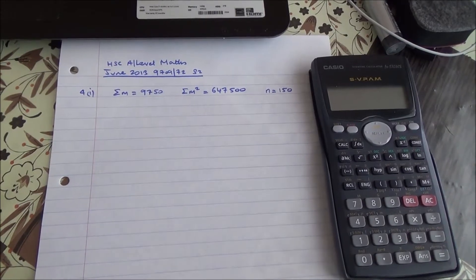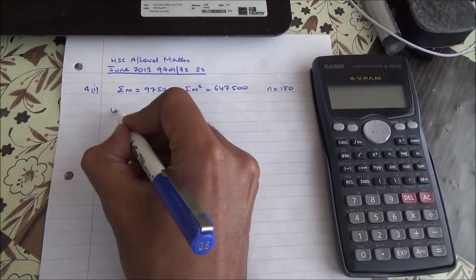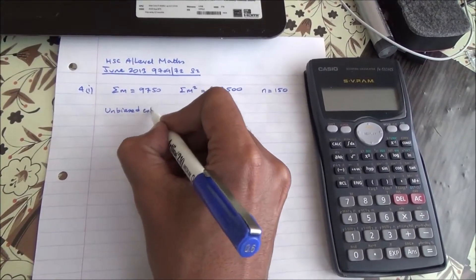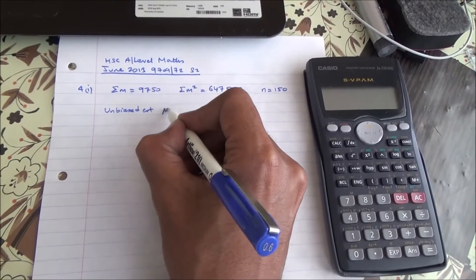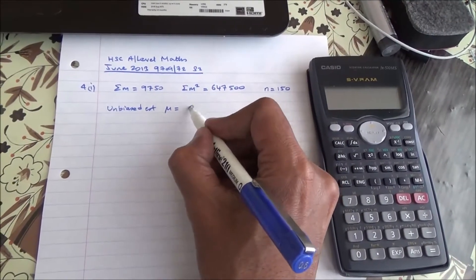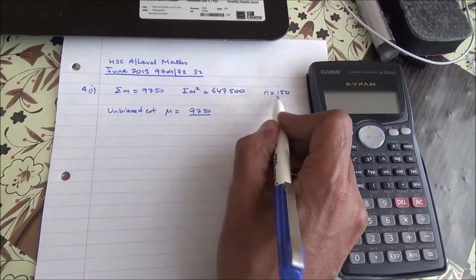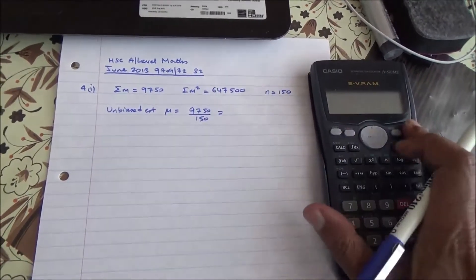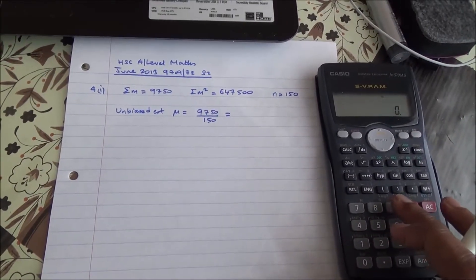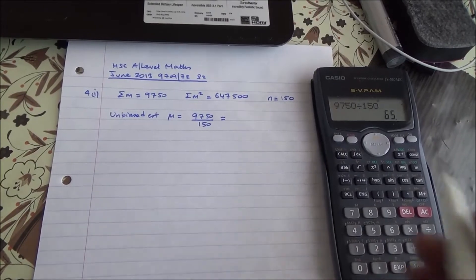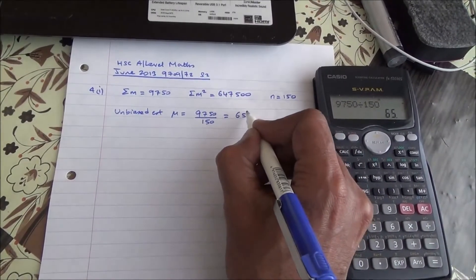Now then, for the unbiased estimates of the mean, the unbiased estimate of the mean mu is going to be 9750 divided by 150. Let's take it out on our calculator here, so that's going to give us 65.